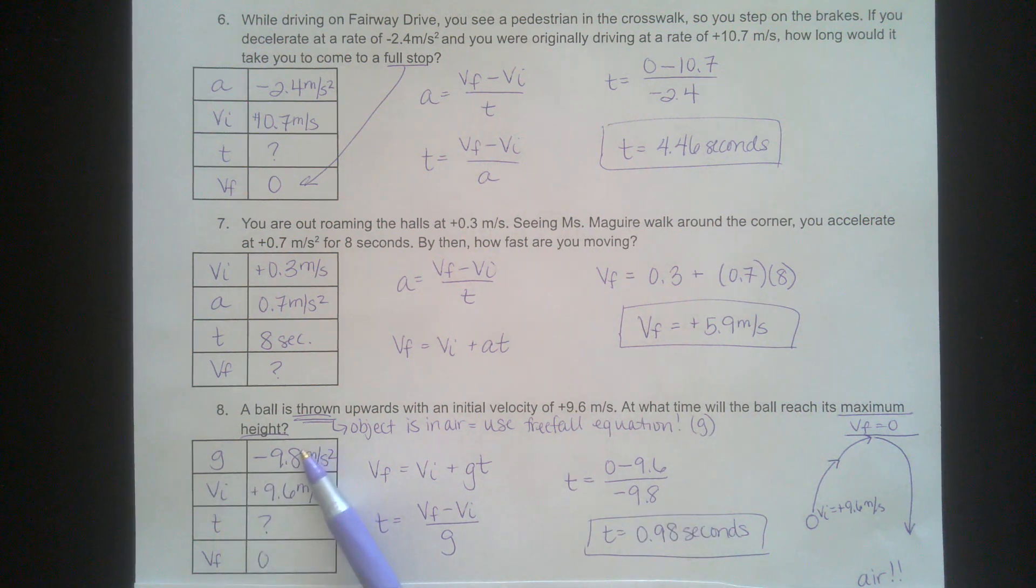G is always negative 9.8 meters per second squared. Ball is thrown upwards into the air with an initial velocity of positive 9.6 meters per second. At what time will the ball reach its maximum height? We know that maximum height is another context clue to let us know that we need to set VF of 0, because an object will hit a velocity of 0 just for an instant before it can turn around and come back down.